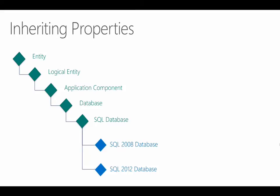Let's illustrate the concept of a base class and inheritance with a specific example. This diagram shows the tree for the SQL database class. At the very root of the tree we have the entity class, which every single other class inherits from — all management packs, every single class, will eventually trace back to entity. It's defined in the system library and it's the only class that doesn't have a base class. In Operations Manager 2012, the entity class has been renamed to object, so you may see that name instead — same class, different name.